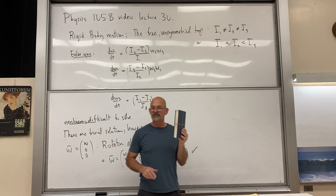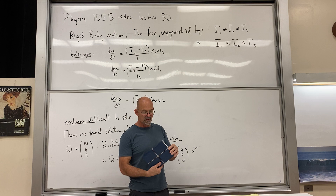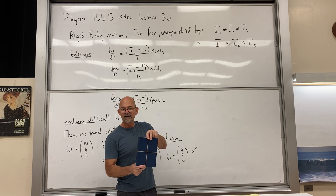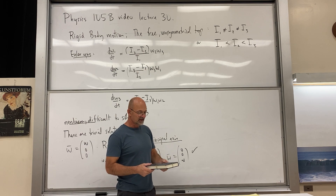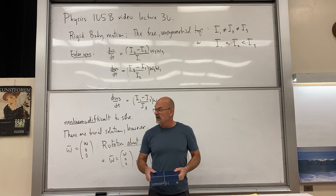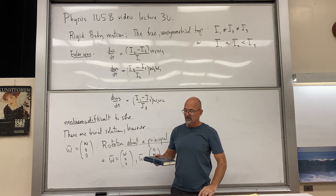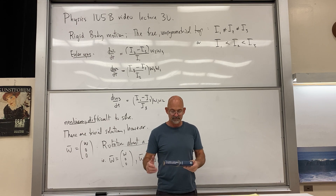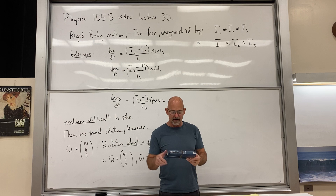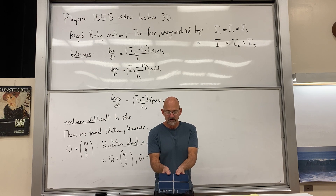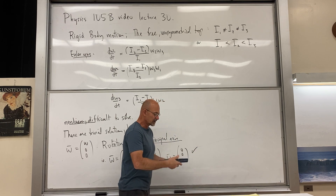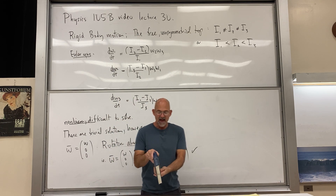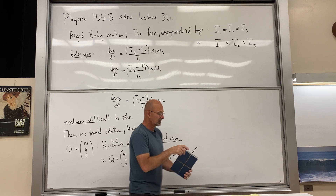Now I'm going to do a demonstration — and you have to do this at home as well. Get a book that has three clearly different moments of inertia and wrap it with string, otherwise when you toss it things go badly. This is a free rigid body. Of course we're under gravity, but if I throw it, it's in free fall, and in the accelerated frame it's as though we have a free body. That's actually our next chapter — motion in accelerated frames.